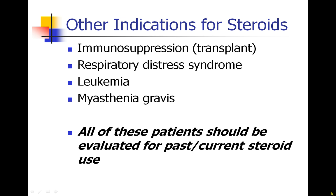Steroids are immunosuppressive, and patients who receive organ transplants are often given steroids to suppress the immune system. Steroids have been used in the treatment of respiratory distress syndrome, leukemia and other certain malignancies, and in the treatment of myasthenia gravis. The reason we mention all of this is so that you know every one of these patients should be asked if they are currently or have recently been taking steroids, and we'll see why that's going to be important in just a couple minutes.